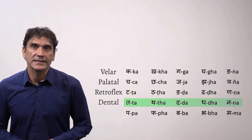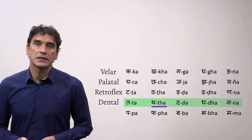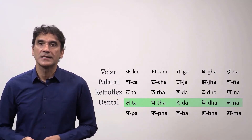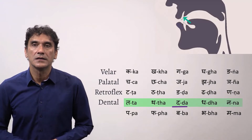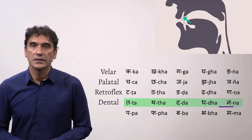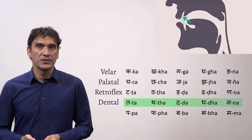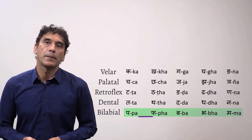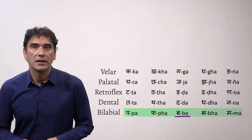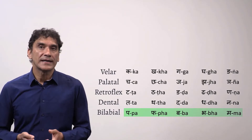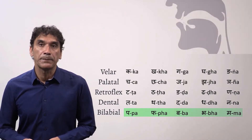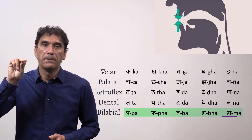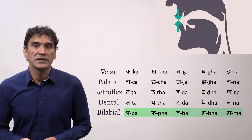The fourth row is the dental sounds — the tongue touches the upper teeth. Here in the diagram you can see where these sounds are produced. The final row is the bilabial sounds. While articulating these sounds, the upper and lower lips meet. Here you can see in the diagram how these sounds are produced.